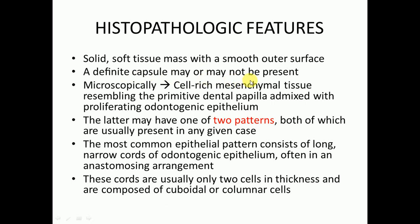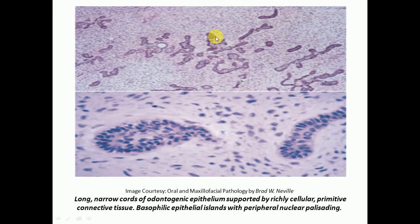Regarding histopathological features, it is a solid soft tissue mass with a smooth outer surface. A distinct capsule may or may not be present. Microscopically, they contain cell-rich mesenchymal tissue resembling the primitive dental papilla, admixed with proliferating odontogenic epithelium. The epithelium may have one of two patterns, both of which are usually present. The most common epithelial pattern consists of long narrow cords of odontogenic epithelium.